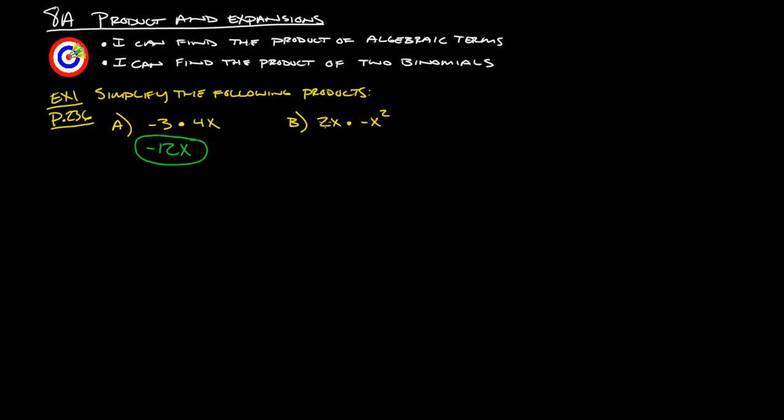This one here, we have 2x times negative x squared. I think of this as negative 1x squared, so I go 2 times negative 1 is negative 2, and then x times x squared is x cubed. So that's all there is for those there.